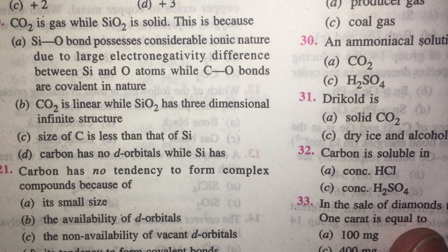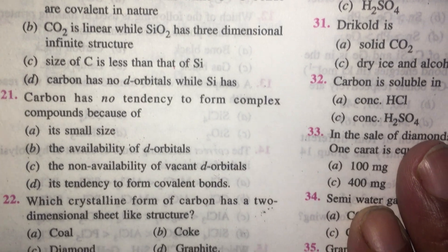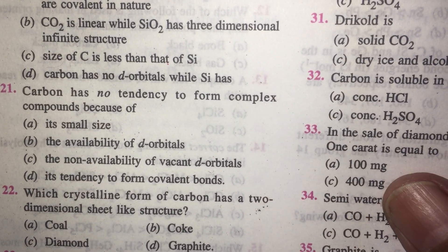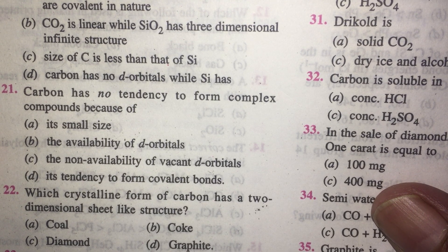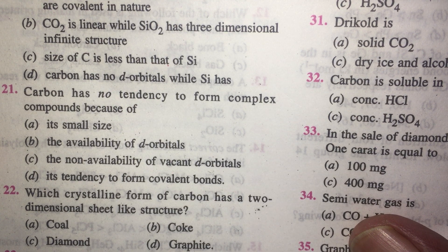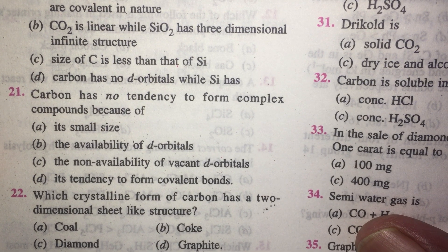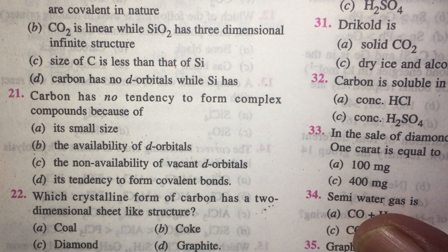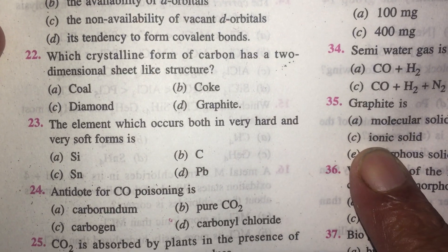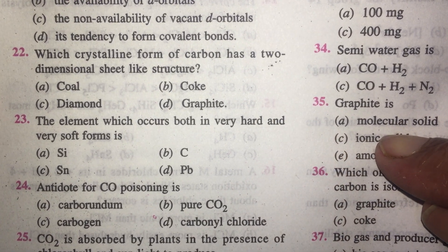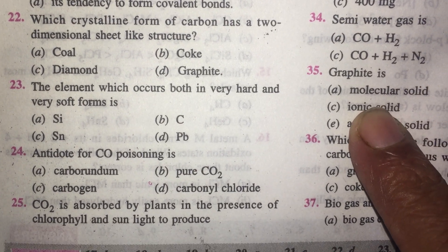Carbon has no tendency to form complex compounds because it does not have d-orbitals — non-availability of d-orbitals. Option C. Which crystalline form of carbon has a two-dimensional sheet-like structure? The answer is graphite, which has a hexagonal layer-like structure.